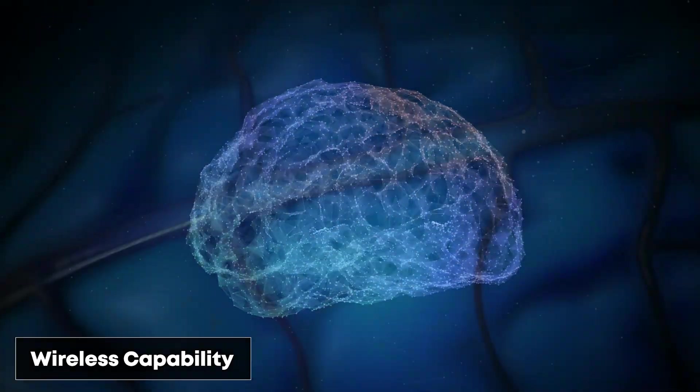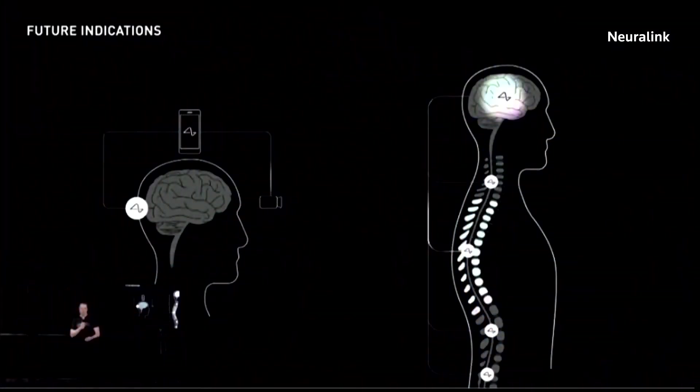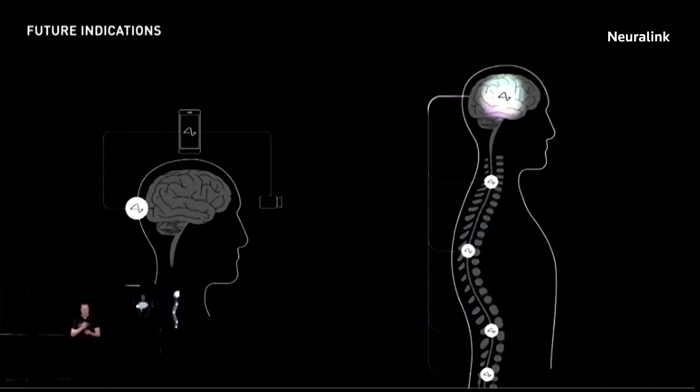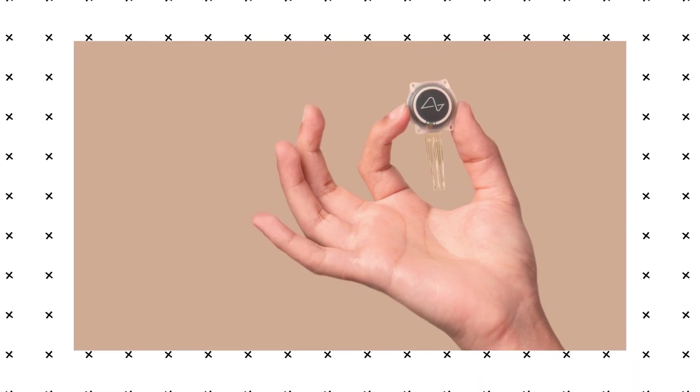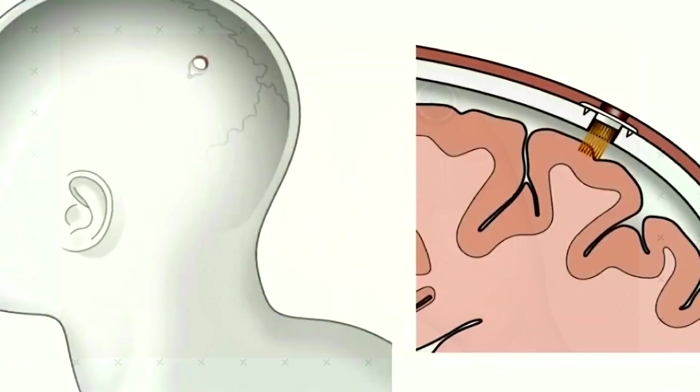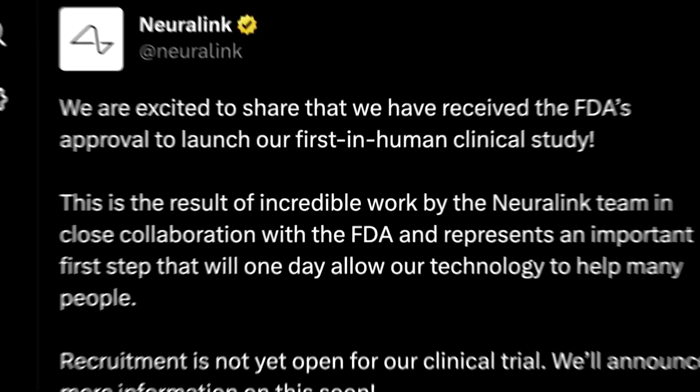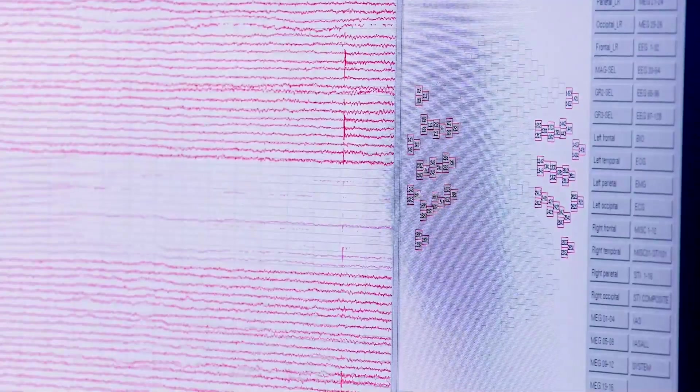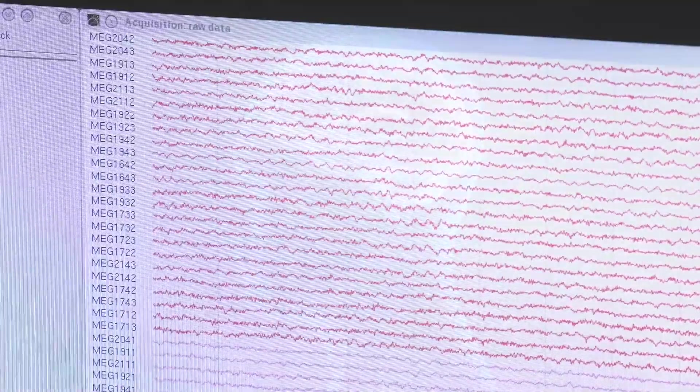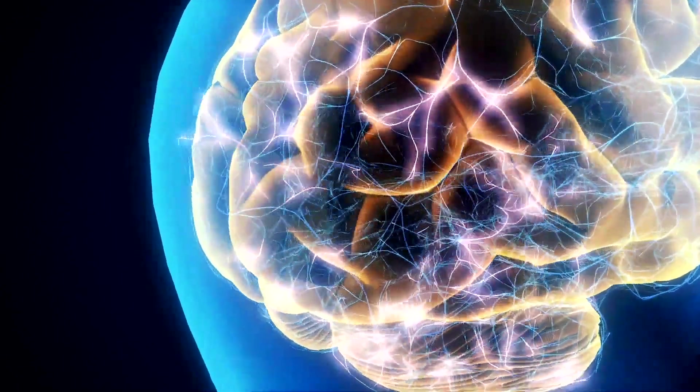Wireless capability: Unlike many earlier brain-computer interfaces, Neuralink's system operates wirelessly. This eliminates the need for cumbersome external wires, reducing infection risk and improving user comfort and mobility. These technological advancements position Neuralink at the forefront of neural interface development, offering the potential for more effective and user-friendly visual prosthetics.